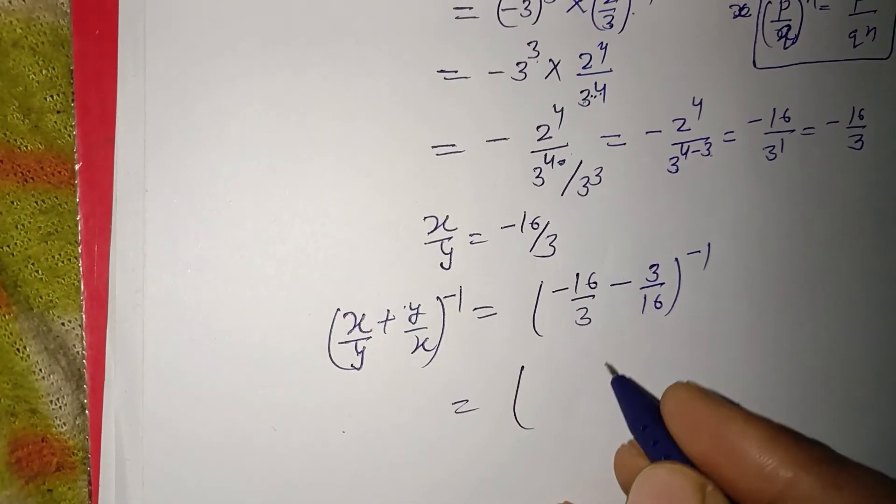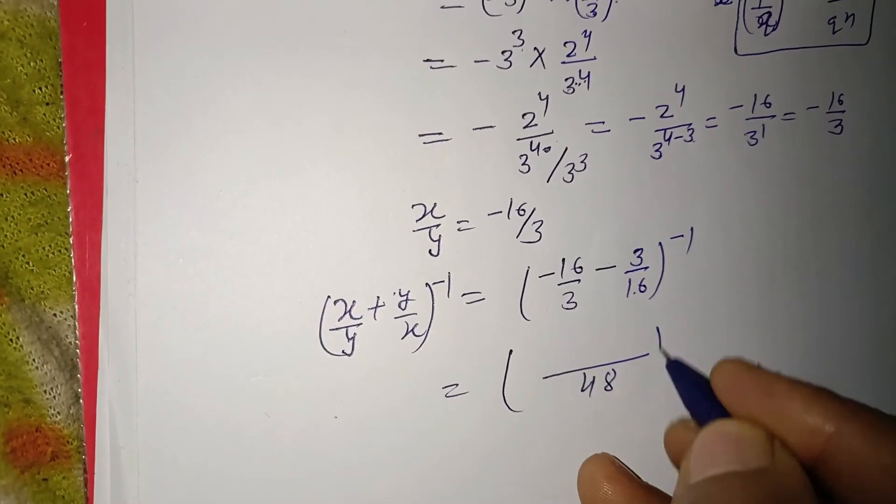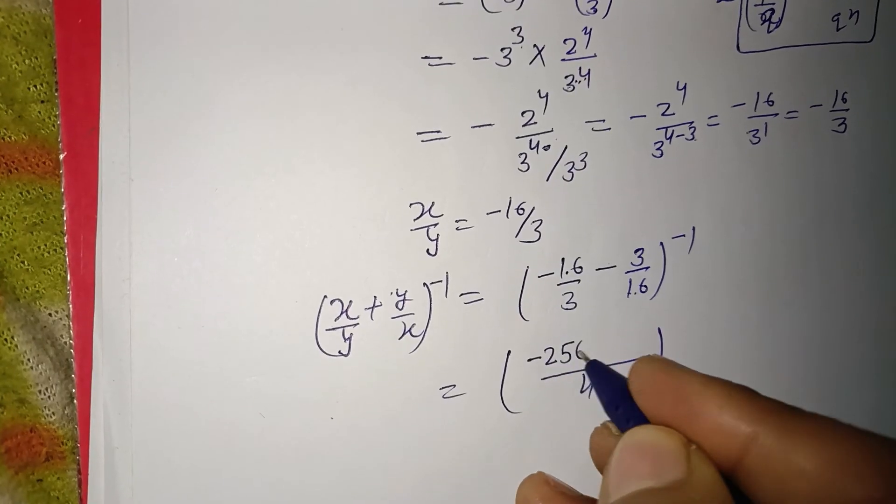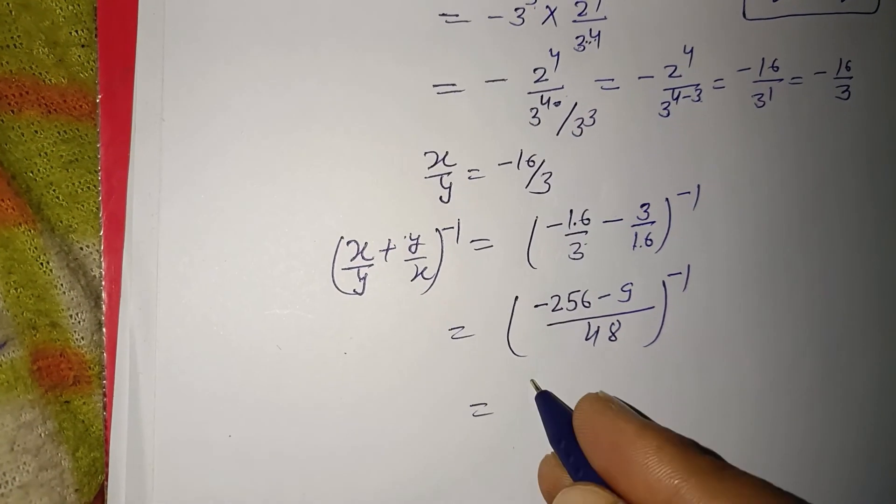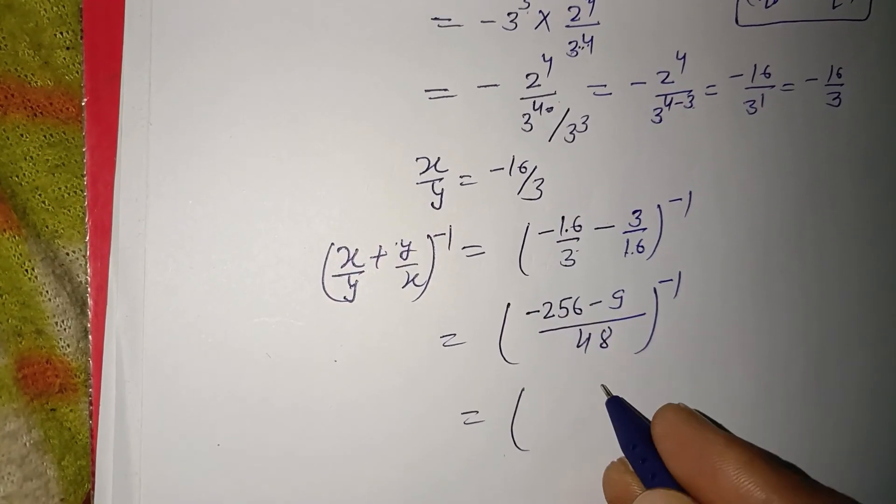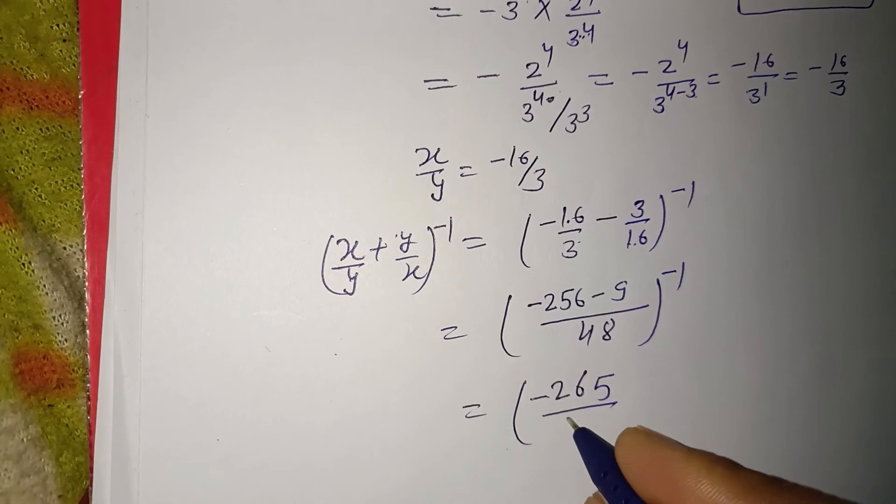Now we simplify this. The LCM of 3 and 16 is 48. This gives us 256 minus 9, which equals 265. So this is -265/48 to the power -1.